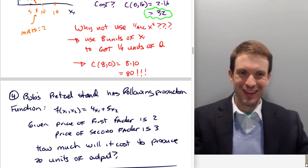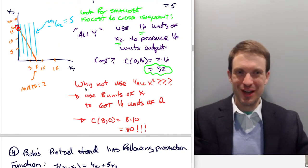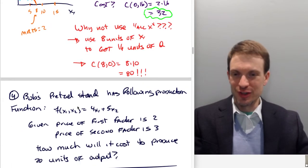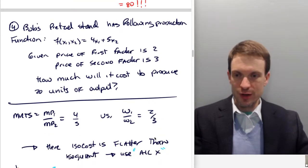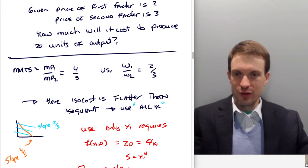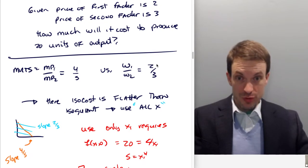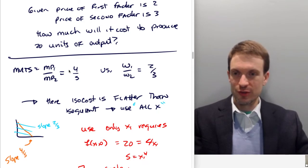I kind of gave away the store by telling you we have these three pictures. We're now going to see the other things. Yeah, you're right. We're going to get an all-x solution. Let's see why, though. So we'll get our marginal rate of technical substitution, MP1 divided by MP2. That's going to be the partial here divided by the partial here. So 4 fifths versus omega-1 over omega-2 is 2 thirds. Here the isocost is going to be flatter than the isoquant. 2 thirds is going to be a smaller number than 4 fifths. This is 0.66, this is 0.8. So the isocost is flatter.